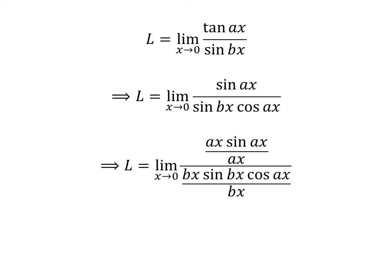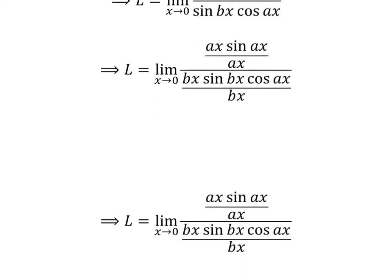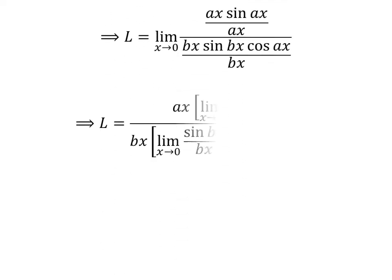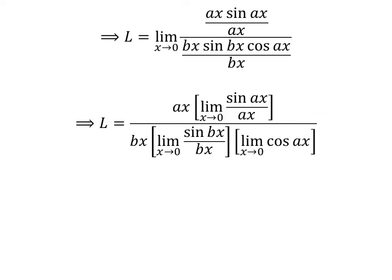Since a times x upon a times x is equal to 1, we multiply the numerator by a times x upon a times x and similarly multiply the denominator by b times x upon b times x. We can then rewrite the expression as L equals the limit of sine of a times x upon a times x, divided by the limit of sine of b times x upon b times x, times the limit of cosine of a times x as x approaches 0.